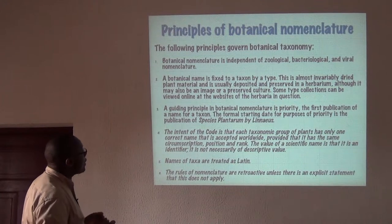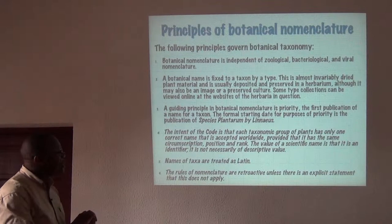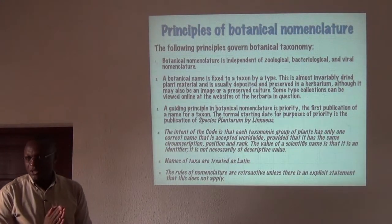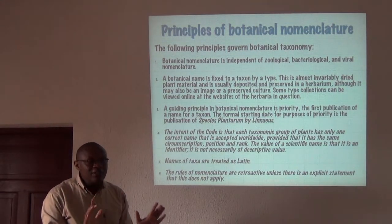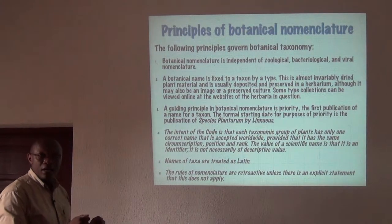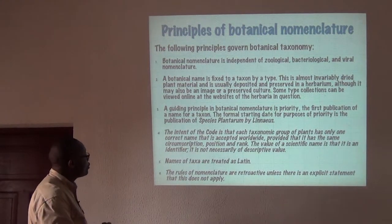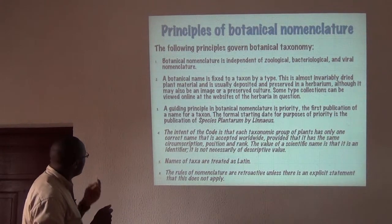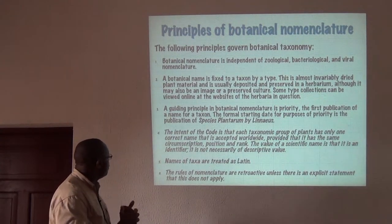The type is almost invariably dry plant material and is usually deposited and preserved in a herbarium, although it may also be an image — the type for plants may also be some very nice graphs or diagraphics of the plant in question. A guiding principle in botanical nomenclature is priority: the first publication of a name for a taxon is the one that is often going to be accepted and used.